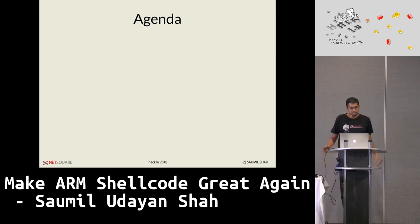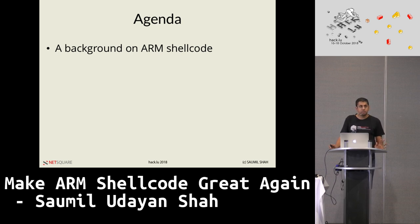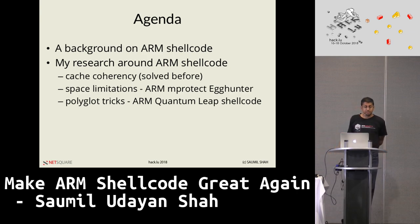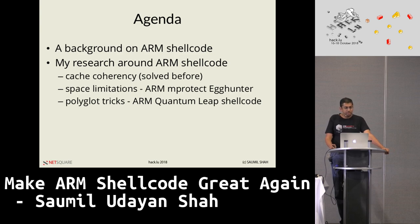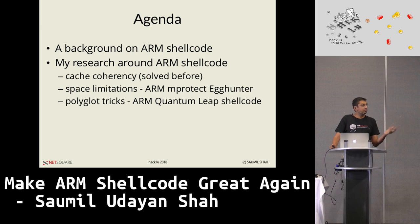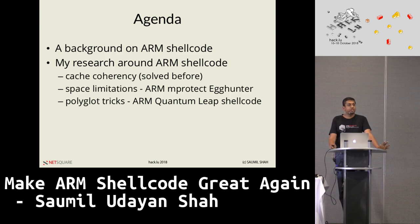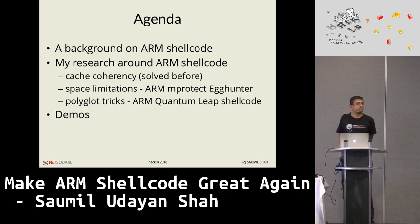My name is Saumil Shah. I'll give you a very brief background about ARM shellcode just to get you familiar with the three-letter acronyms popping up on the screen. I'm going to focus on two techniques. One is how do we get around space limitation in shellcode — I put together an ARM egg hunter — and the second trick is ARM quantum leap shellcode, which involves polyglot instructions. And then, of course, we'll have demos.